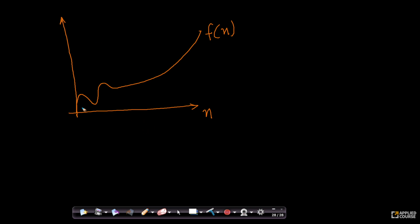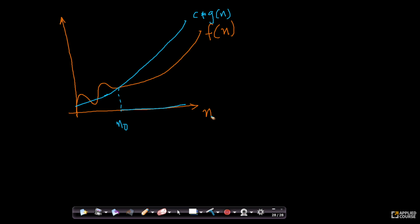Now, let us assume there exists a function — a constant multiplied by g of n — such that for all values of n greater than or equal to n0, this function lies above f of n. Here n0 is a constant and c is also a constant. For all values where n is greater than n0, the constant c multiplied by g of n is greater than or equal to f of n.